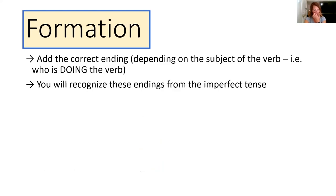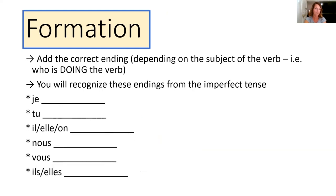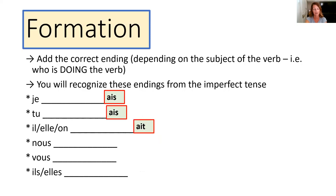You'll recognise these endings from the imperfect tense. So there we have our pronouns, and the endings go like this: AIS, AIS, AIT, IONS, IEZ, AIENT. So je (I) takes AIS, tu (you, talking to a friend) takes AIS, il/elle/on (he/she/one or a general 'we' or 'you') takes AIT.